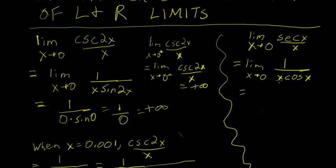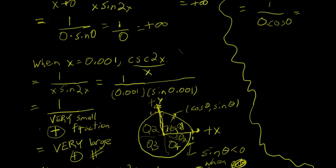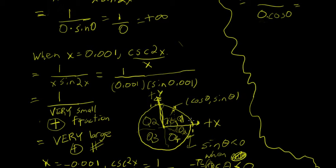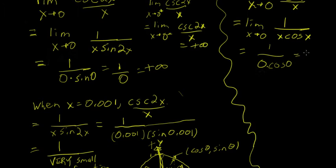You may be tempted to plug in 0: as x gets close to 0, this x gets close to 0, and cosine of x gets close to cosine of 0. Going back to the unit circle, cosine is the x coordinate, and when theta is 0, cosine is 1. It's less than 1 as theta moves toward pi over 2, but at 0 the cosine is 1. So we'd have 1 over 0 times 1.